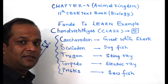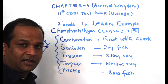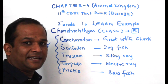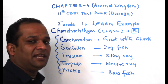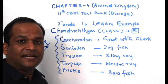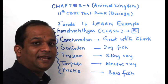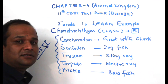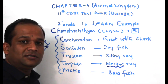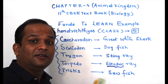So again: C for Carcharodon — great white shark. S for Scoliodon — dogfish, with smelling power like a dog. T for Trygon — stingray. T for Torpedo — electric ray. Torpedo produces electricity by using muscles, not nerves.